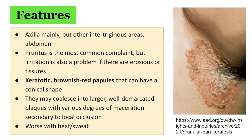The clinical features of granular parakeratosis include primary lesions of keratotic brownish-red papules that can have a conical shape. They may coalesce into larger, well-demarcated plaques with various degrees of maceration secondary to local occlusion. The lesions can persist for months or longer and may recur. Pruritus is the most common complaint; however, irritation is also a problem if there are erosions or fissures. Some patients may experience a flare with increasing surrounding temperature or sweating.